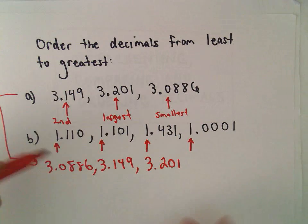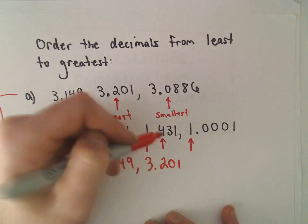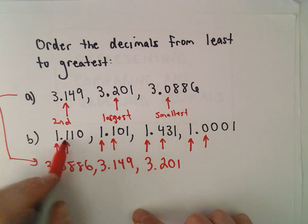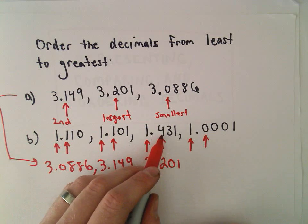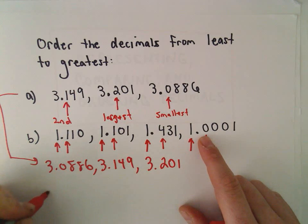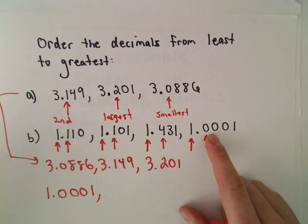Then I look at the next digit. Okay, so my next digit, this one has a 1, this one has a 1, this one has a 4, this one has a 0.